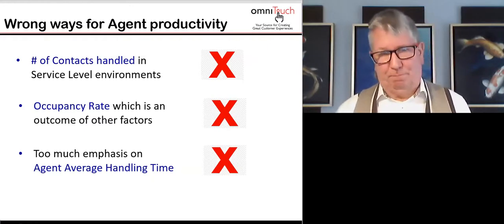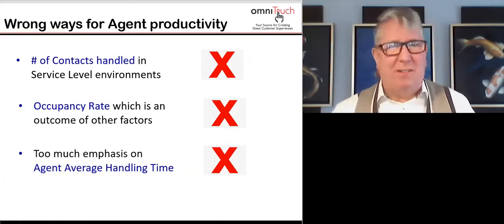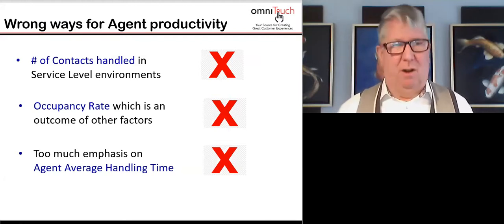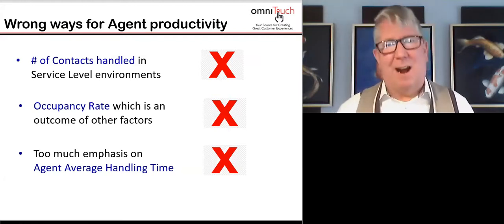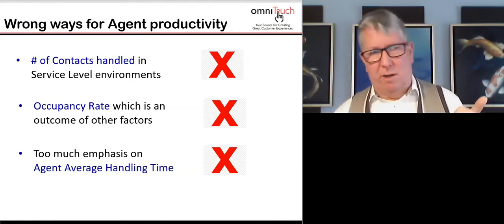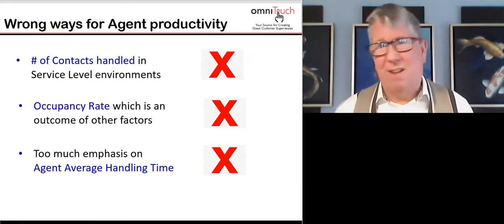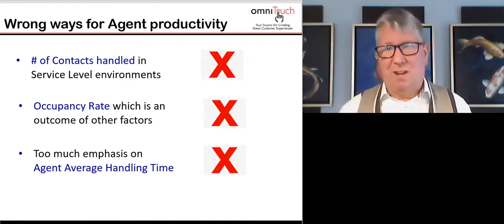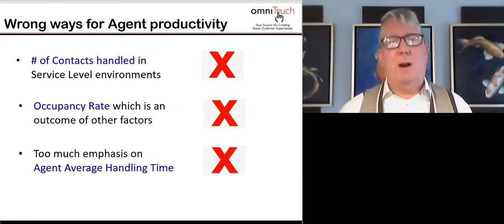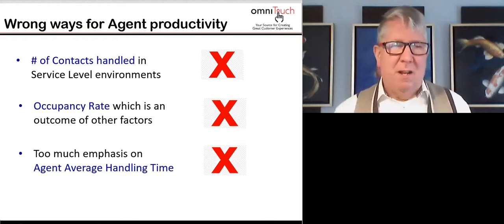The second wrong measure is occupancy rate. Occupancy is a fancy way of saying how busy the agent was when logged in to serve customers. But targeting agents on occupancy rate has always been wrong — agents don't control how busy they are when they're logged in. If you're an agent targeted on number of contacts handled or occupancy rate or both, life is not very happy — and customers will tell you the same. You risk many problems if you ignore fundamental operations.